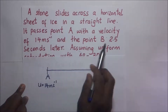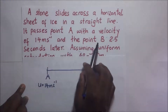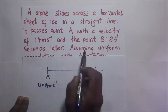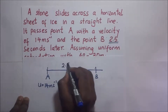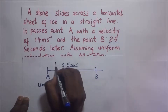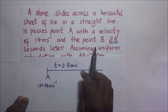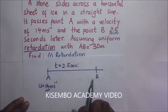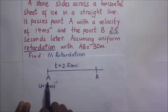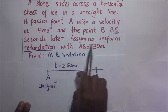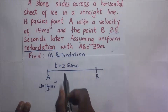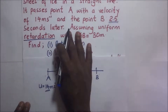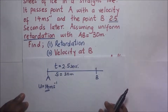It passes point A with an initial velocity of 14 meters per second, and then reaches point B 2.5 seconds later. So the time taken to move from A to B is 2.5 seconds, assuming uniform retardation — meaning the rate of change of velocity was reducing as the body moved from A to B. The distance AB is 30 meters, so our displacement s is 30 meters. They are asking us to find: (i) the retardation.